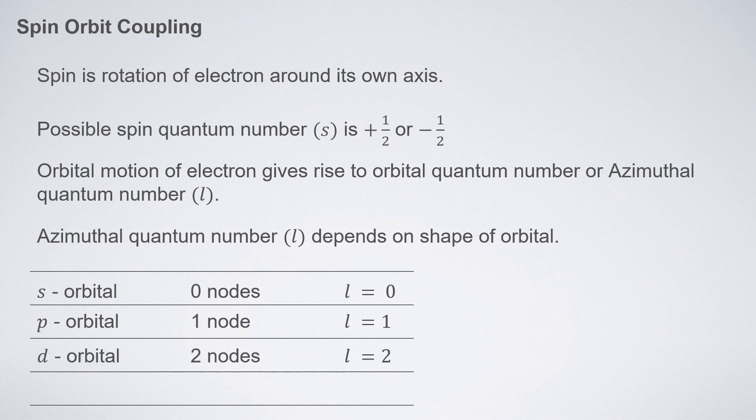For d orbitals having two nodes — one for dxy, dyz, and dxz orbitals and one for dz² and dx²-y² orbitals — the azimuthal quantum number l is two. For f orbitals with three nodes, l is three.